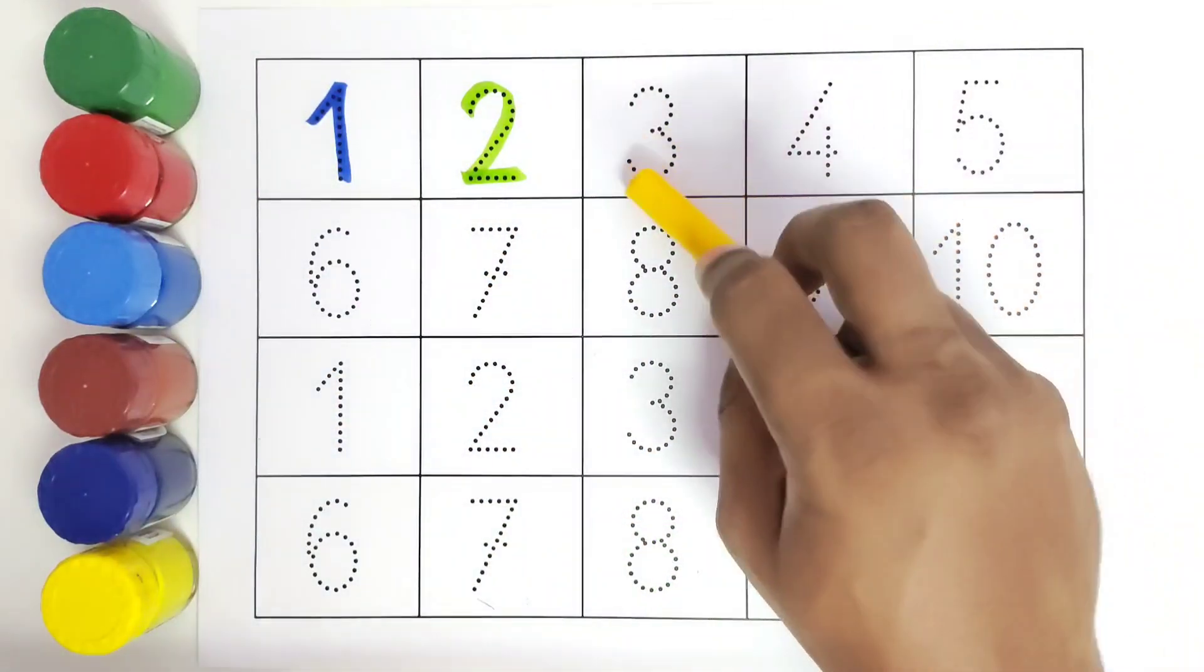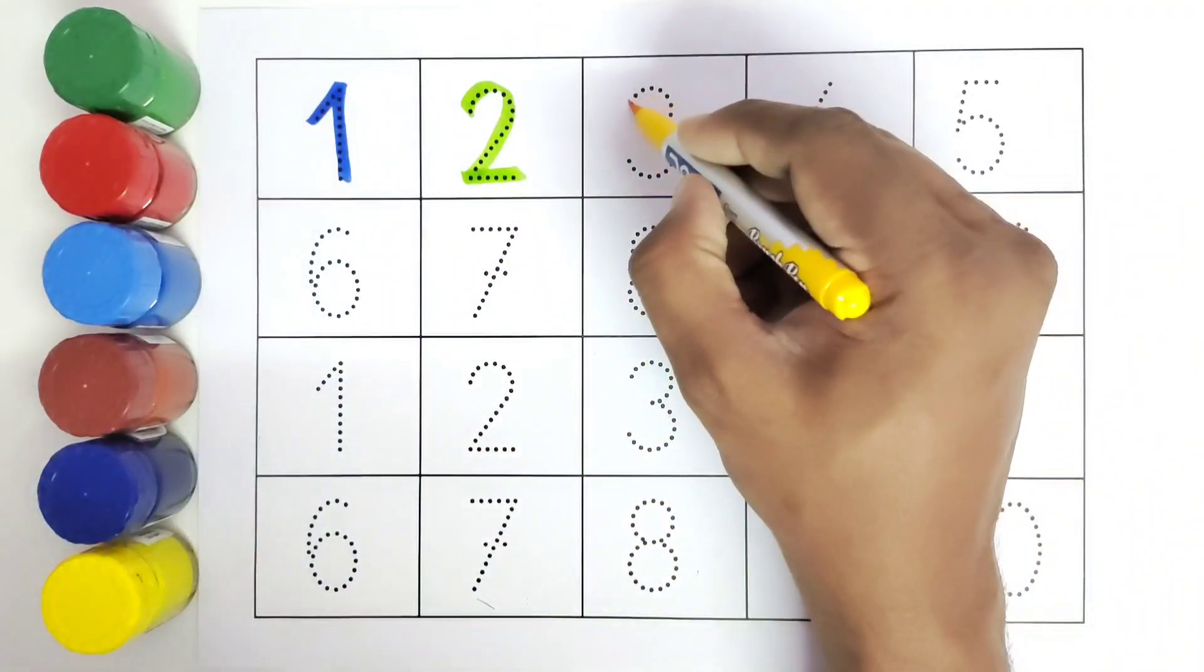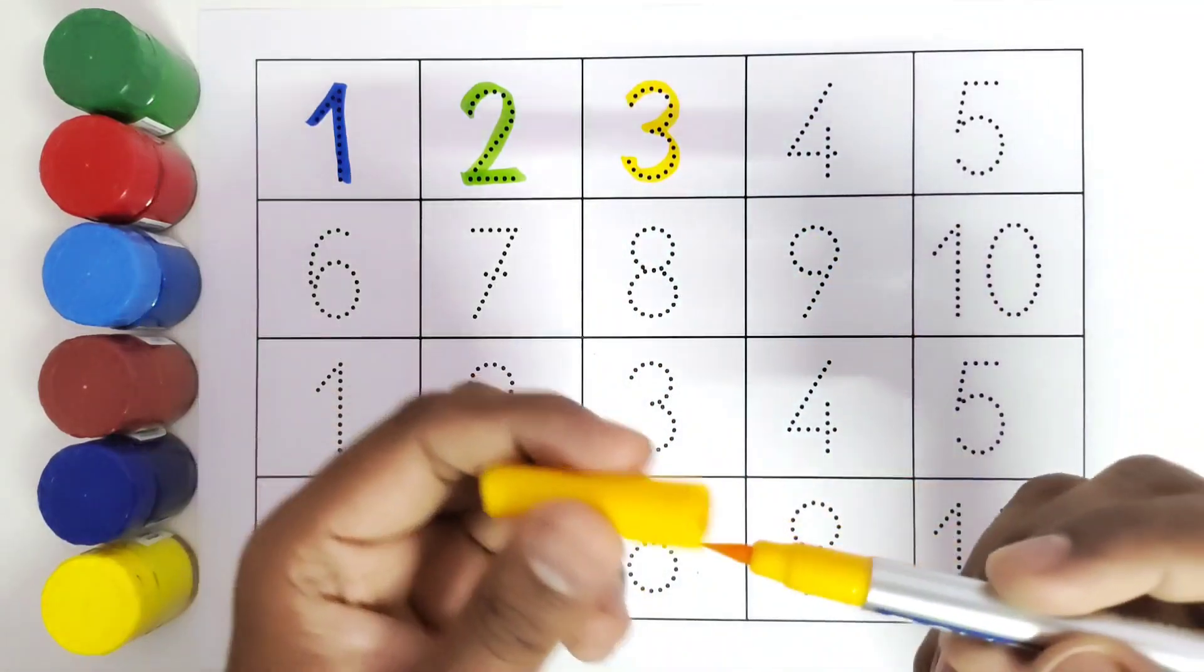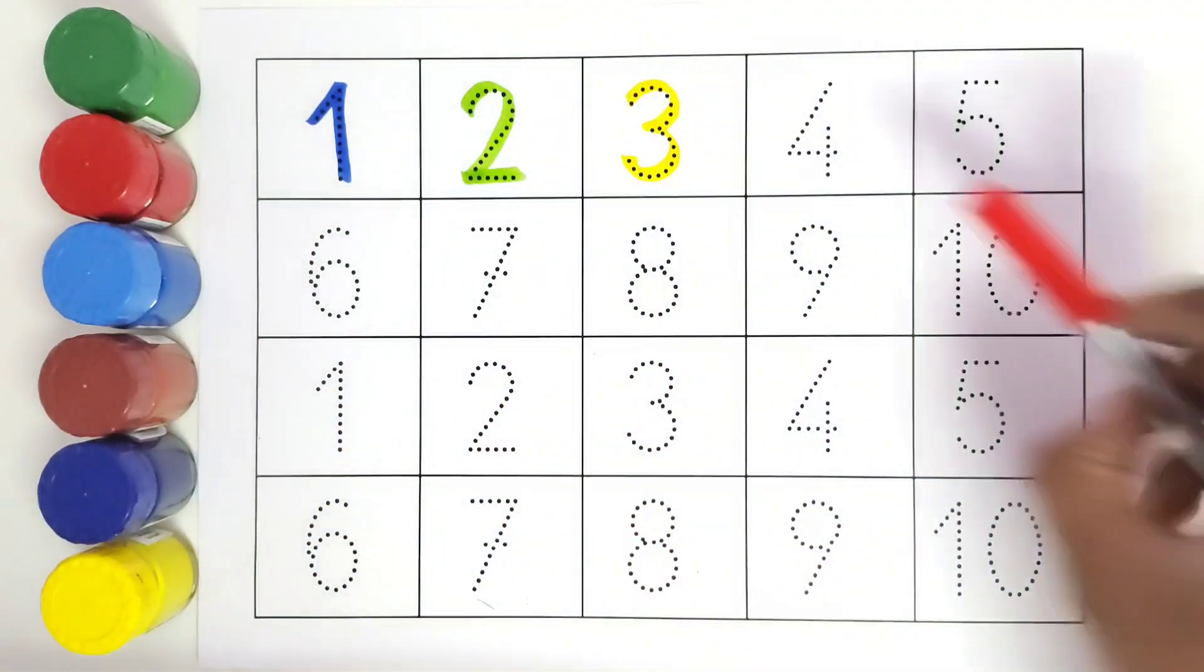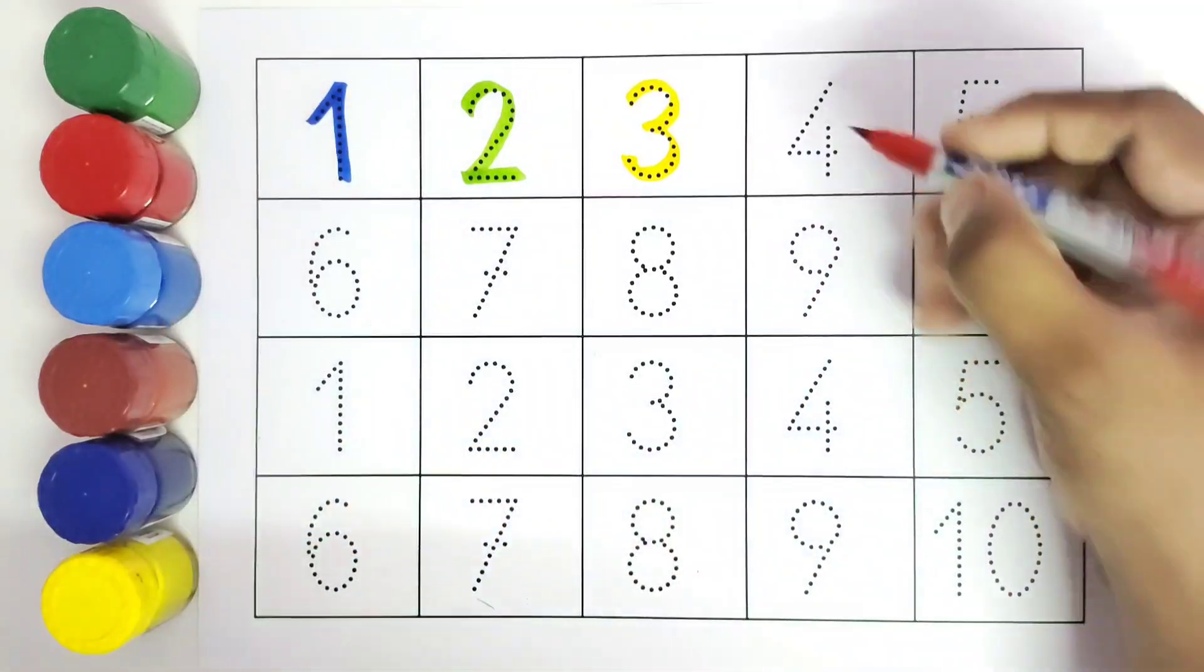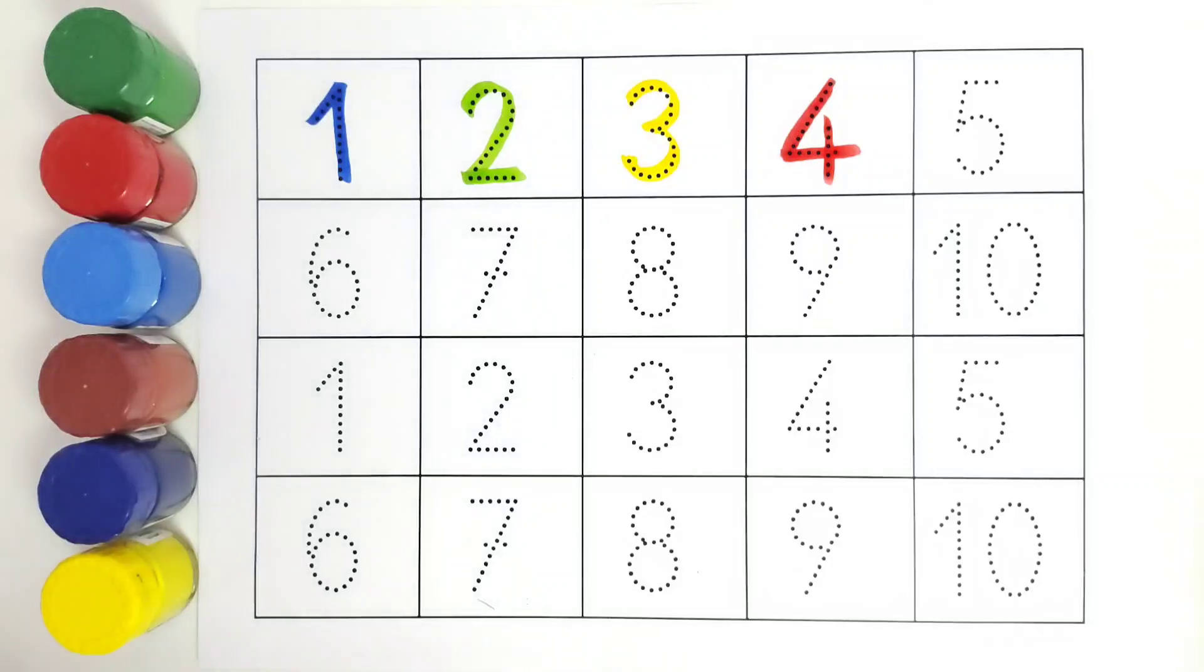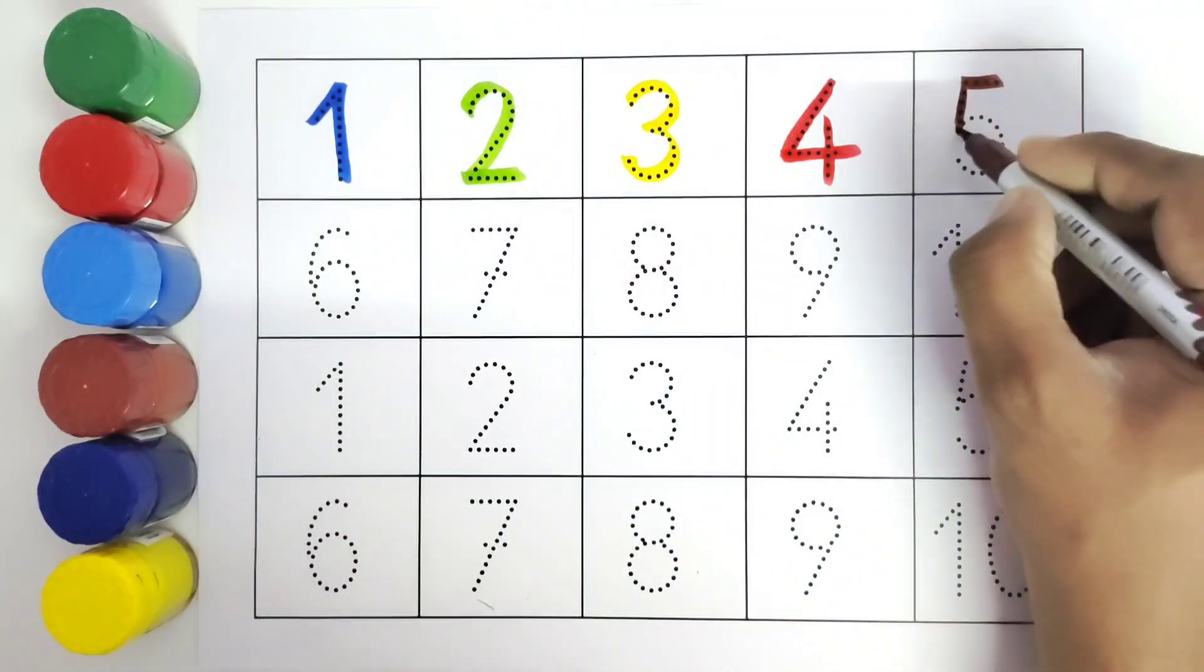This is 3. Number 3. This is 4. Number 4. This is 5. Number 5.